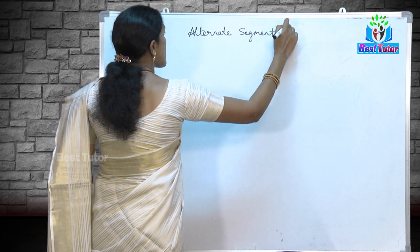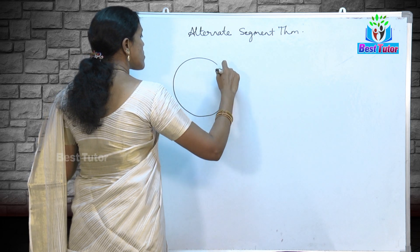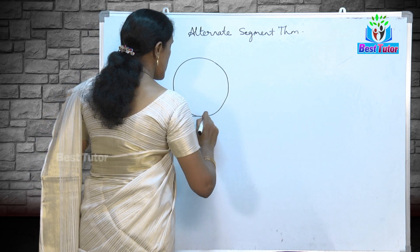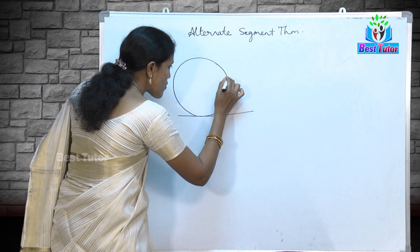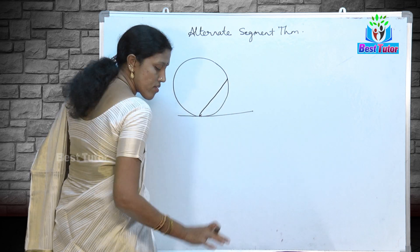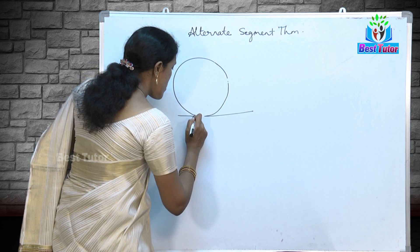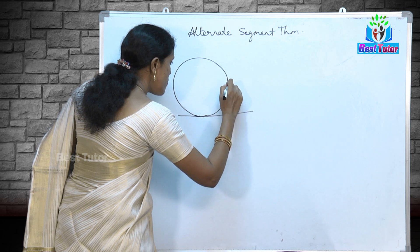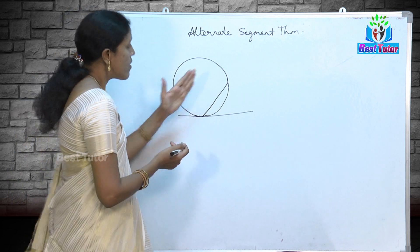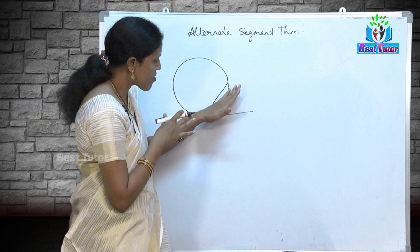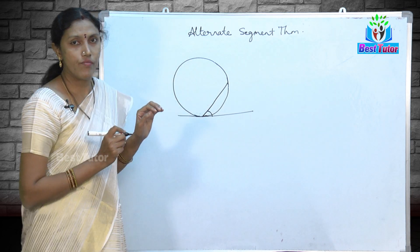This is a circle with a tangent at the point of contact. From this point of contact I can draw infinite chords to this circle. Whatever chord I have chosen — I have chosen one chord — this chord divides the circle into two segments: a minor segment and a major segment.